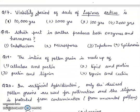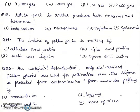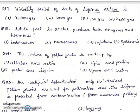Question 17. Viability of seeds of Lupinus arcticus is: 1. 10,000 years, 2. 1,000 years, 3. 100 years, 4. 2,000 years. Right answer will be 1st, 10,000 years.